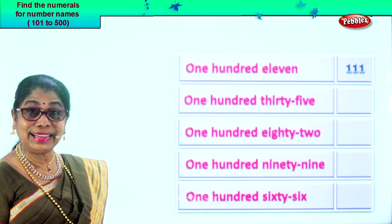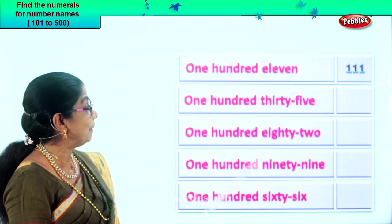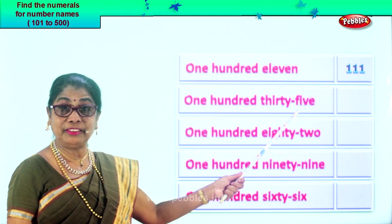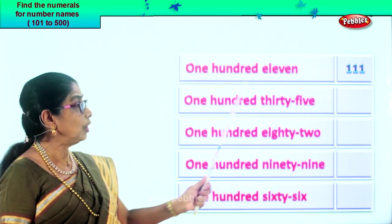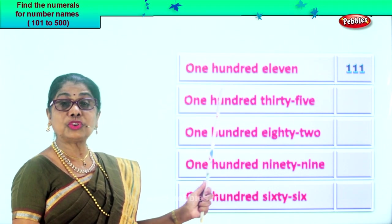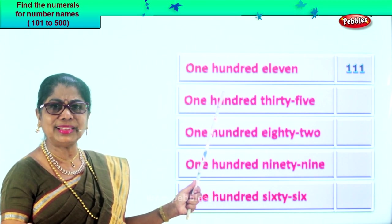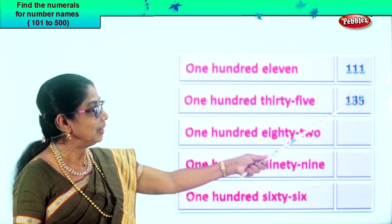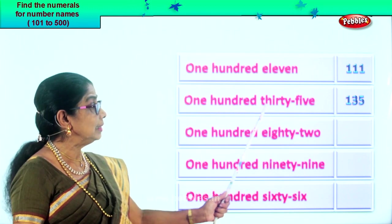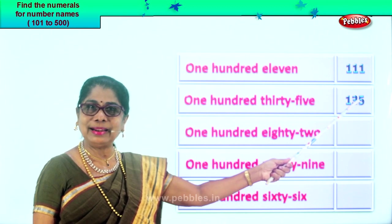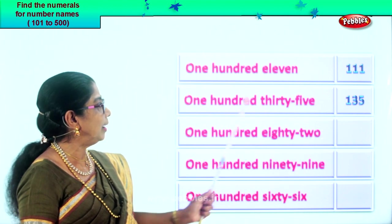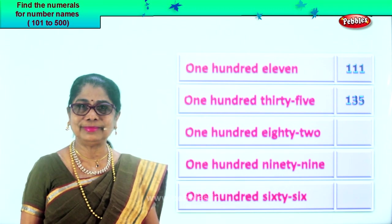Let's take the next number name and find the numeral. One hundred thirty-five. Thirty-five. You had one hundred eleven before. Here, thirty-five. So how will you write one hundred? Then you put thirty-five. That's it. Very easy, isn't it? Remember the place value — one, ten, hundred. One hundred we have, next number is thirty-five. One hundred thirty-five. When you read this numeral and the number name, it should be the same. One hundred thirty-five. That's how we check out.